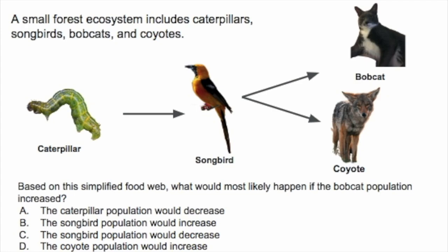Let's talk about this question here. We see here we have a picture of a caterpillar, a songbird, a coyote, and a bobcat. Well, it's not really a bobcat — this is actually the channel mascot, Tommy the Cat, who is my pet cat.